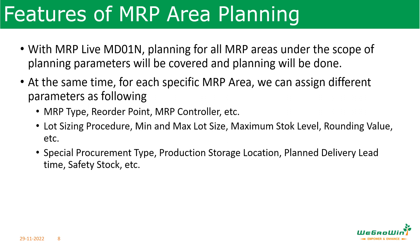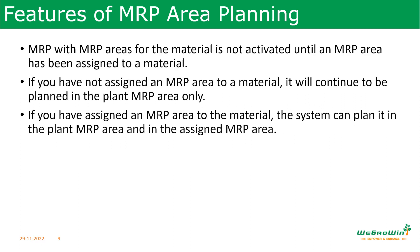The system takes the parameters for each MRP area. You can define individual parameters like MRP type, reorder point, MRP controller, lot size procedure, minimum/maximum lot size, and special procurement — all for a specific MRP area. Using these parameters, the system determines which MRP area gets a specific proposal, so you can procure or produce accordingly. Note that MRP with MRP area is not activated until the MRP area has been assigned to the material. If you have not assigned an MRP area to a material, the system will continue to run plant-level MRP. If you assign the MRP area, planning can run both at plant level and at the assigned MRP area level.